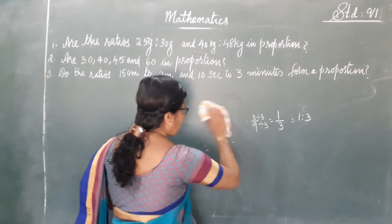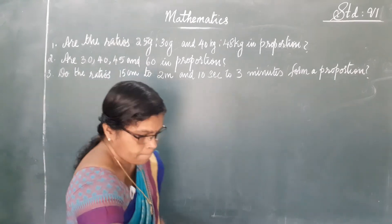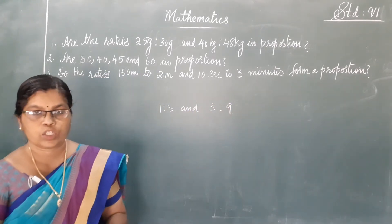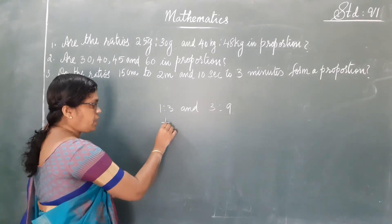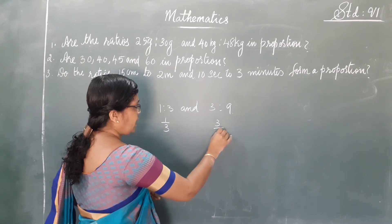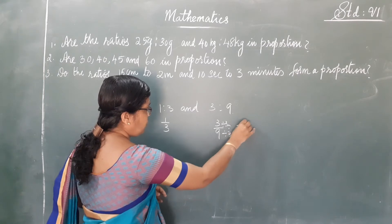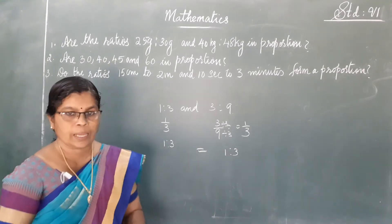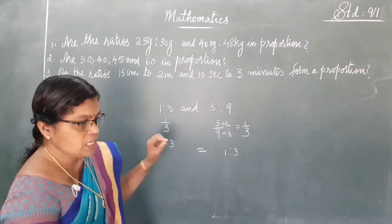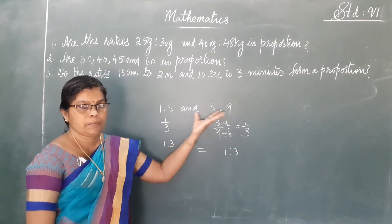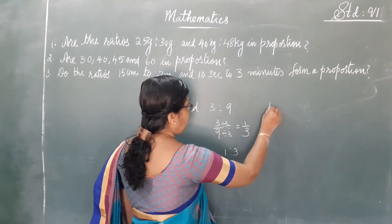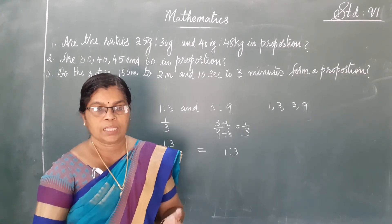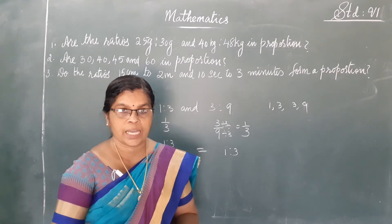Now let us check whether 1 is to 3 and 3 is to 9 are in proportion. The ratio of 1 is to 3 is 1 by 3. Then 3 by 9 — dividing by 3 — we get 1 by 3. Both ratios are 1 is to 3, so they are equal and they are in proportion. Therefore, 1, 3, 3, 9 are in proportion.